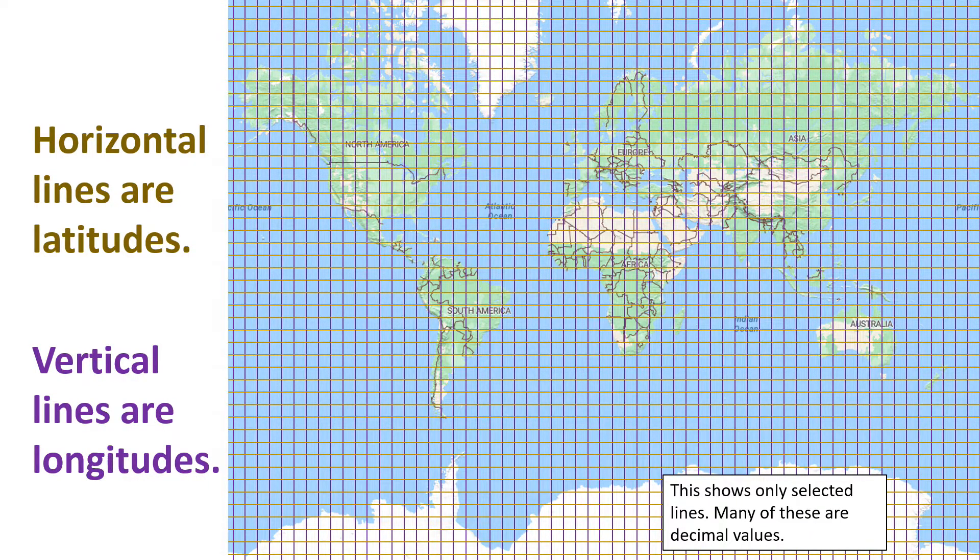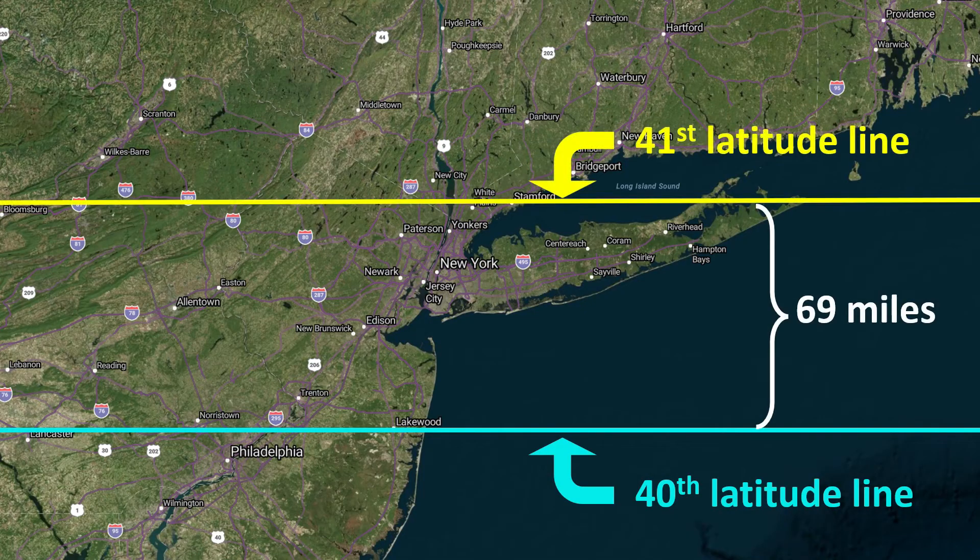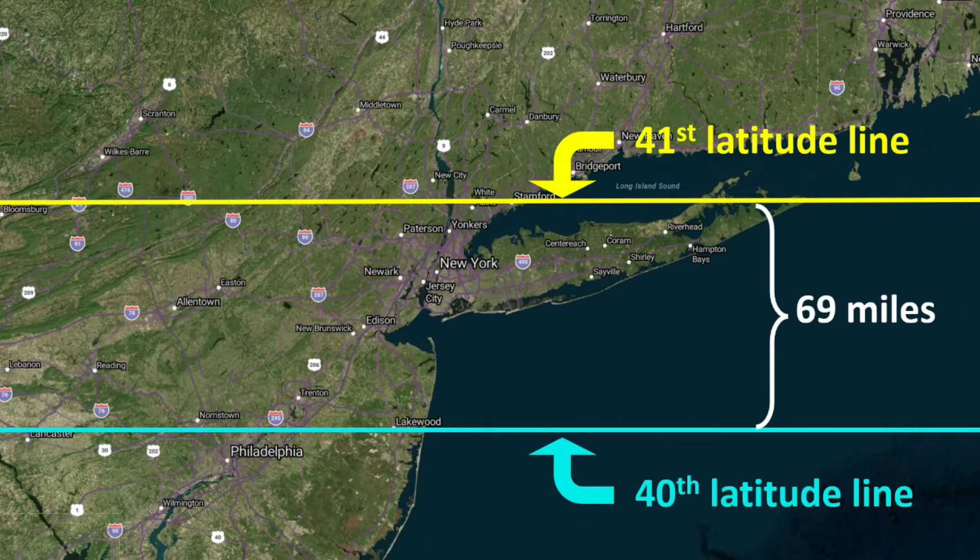This schematic shows just a few of the lines of latitude and longitude. There are about 200 lines of latitude between the North Pole and the South Pole, which means there are almost 70 miles between each line of latitude.